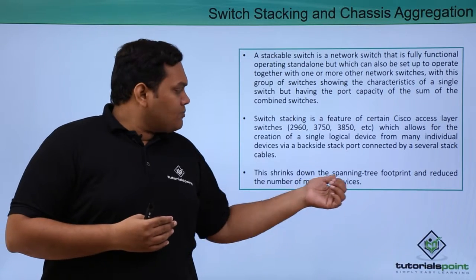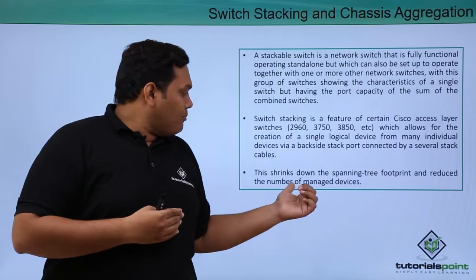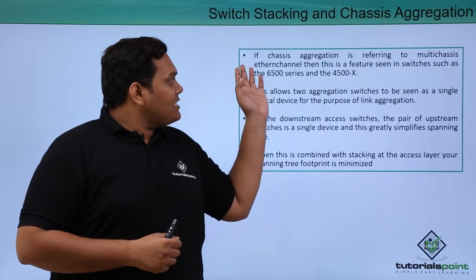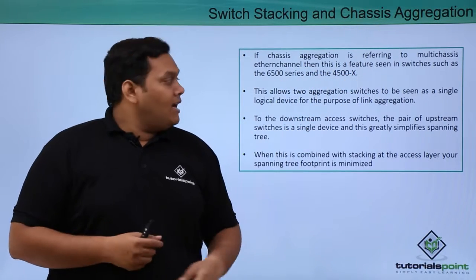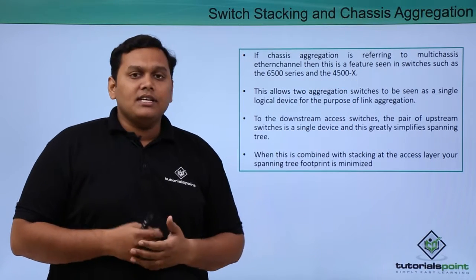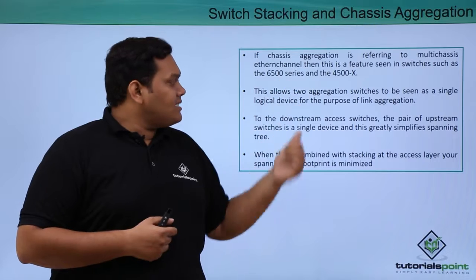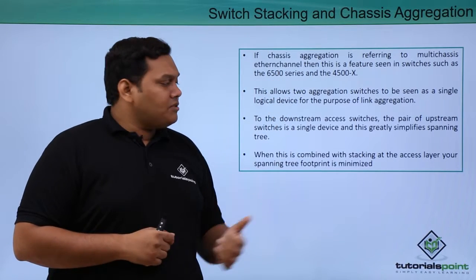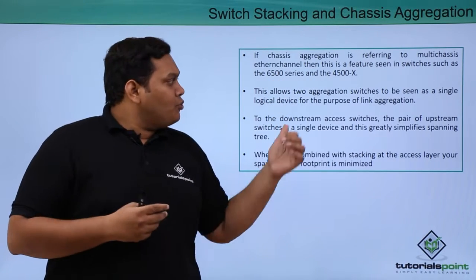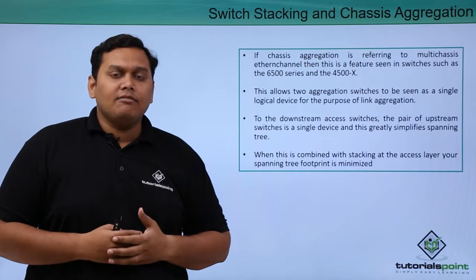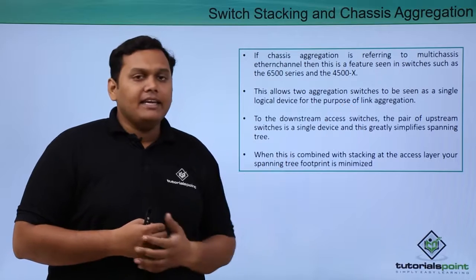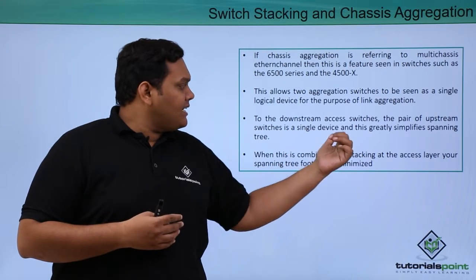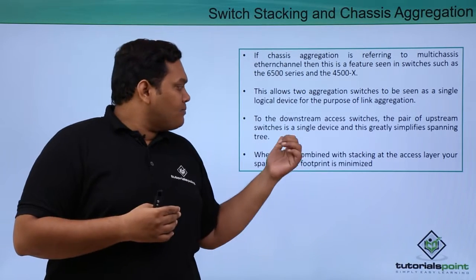This shrinks down the spanning tree footprint and reduces the number of managed devices. Chassis aggregation refers to multi-chassis EtherChannel, a feature seen in switches such as the 6500 series and 4500X series, which allows two aggregation switches to be seen as a single logical device for the purpose of link aggregation, simplifying spanning tree for downstream access switches.